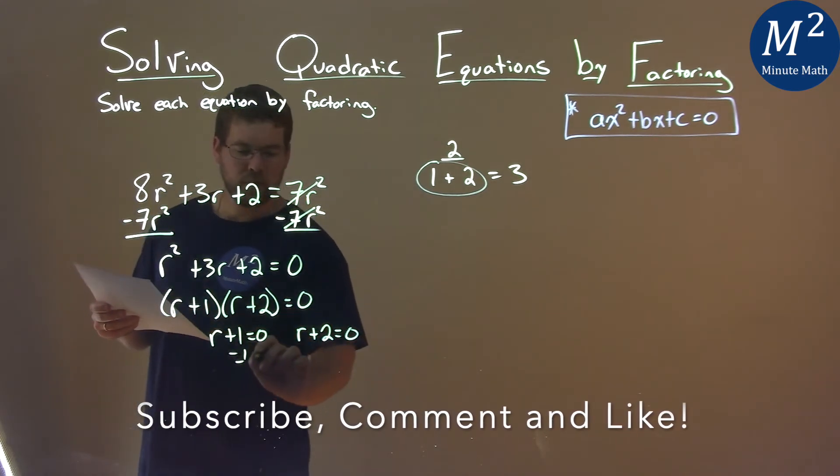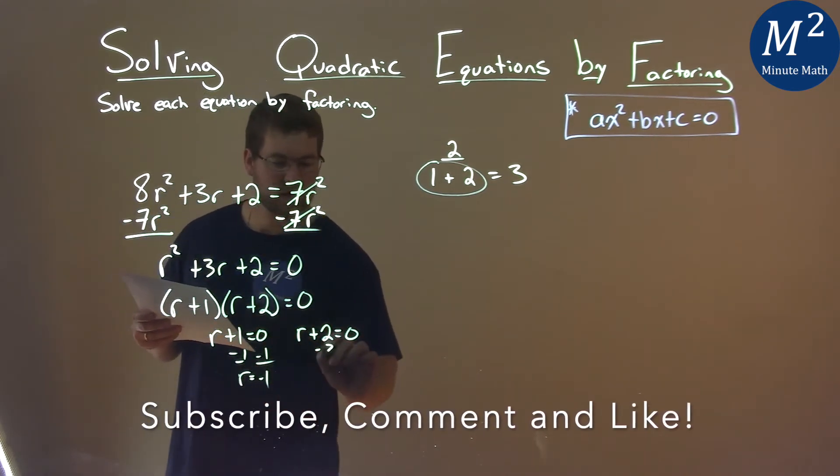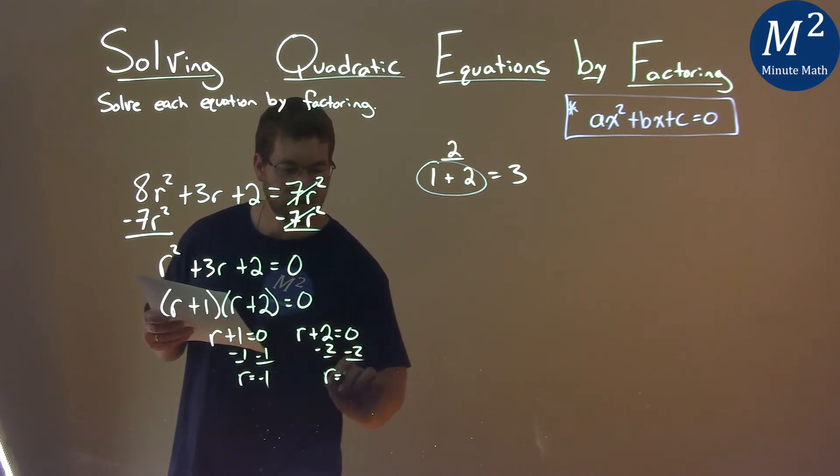We then subtract 1 to both sides, and r equals negative 1. Subtract 2 to both sides, and r equals negative 2.